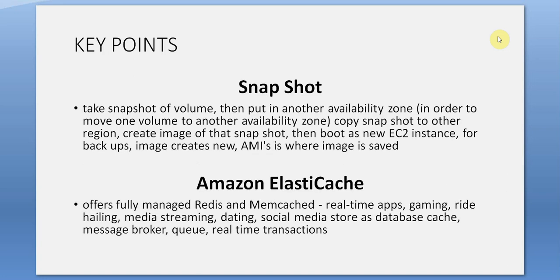Snapshot: to take a snapshot of a volume and then put it in another availability zone. To move a volume to another availability zone, copy the snapshot to another region, create an image of that snapshot, then boot it as a new EC2 instance for backups. The created image is a new AMI and is where the image is saved.